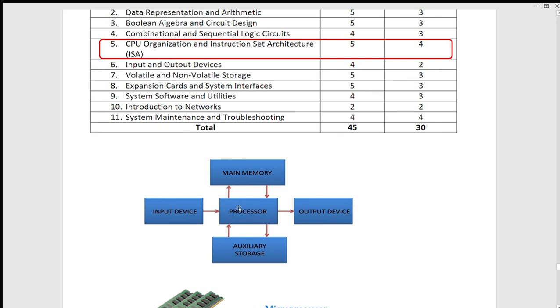If you have a particular instruction set architecture, it is a particular type of process. If you have a standard for x86 or Intel processor, it is a standard for x86. So it is software for x86 — if you have a specific architecture, it is software built for that x86 architecture.